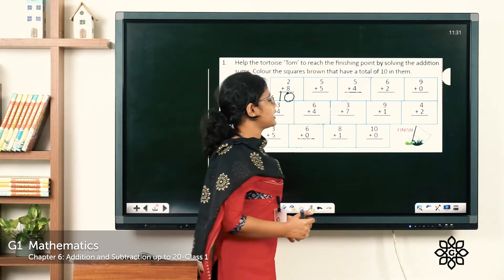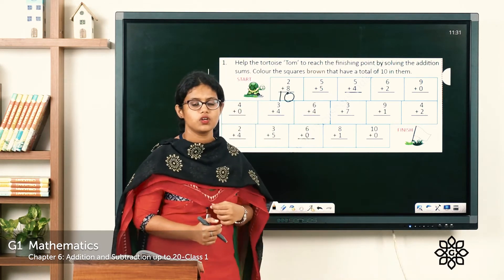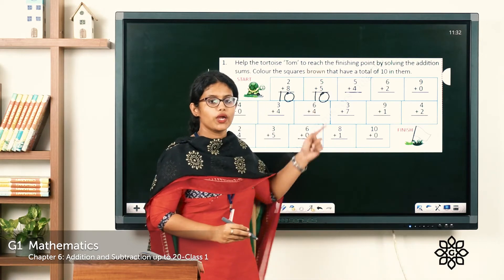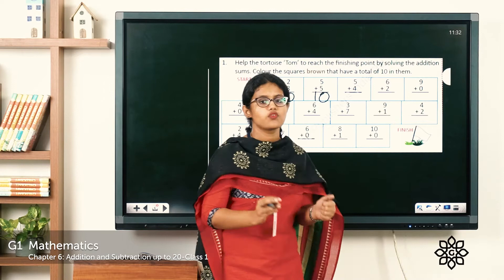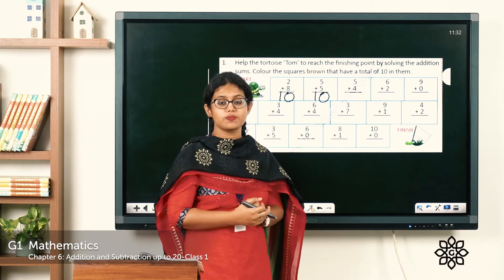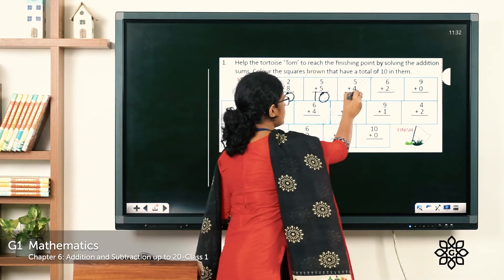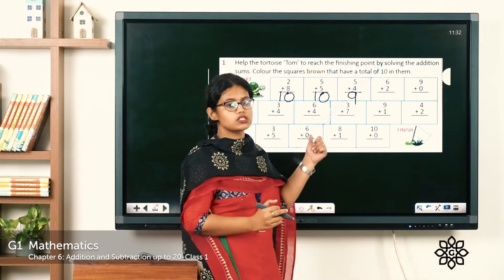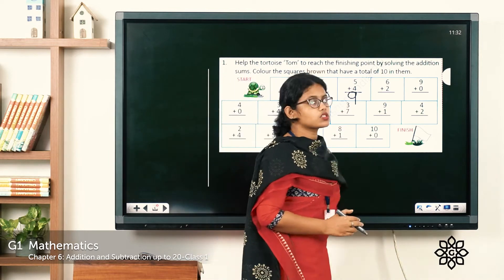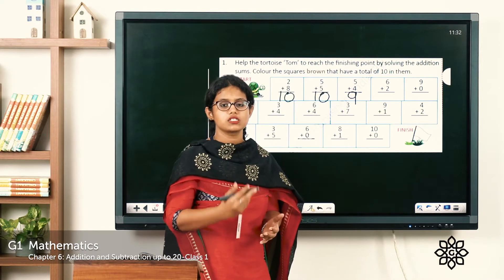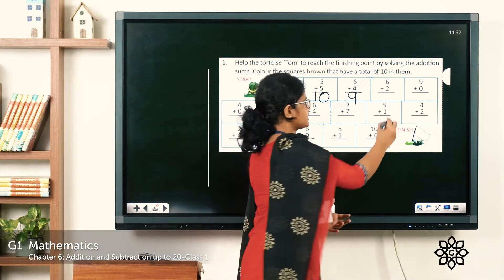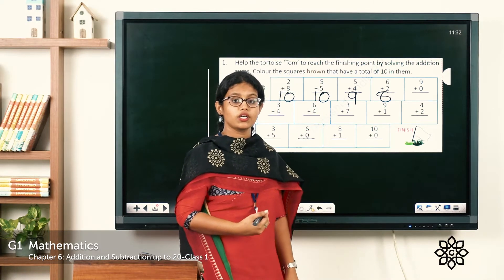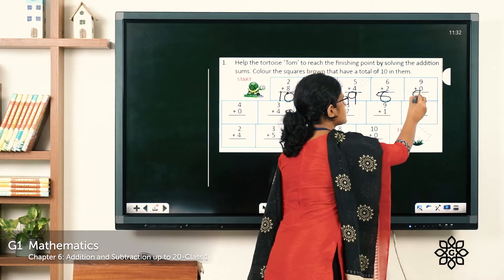Next, 5 plus 5 equals 10 — color this square brown again. The next one, 5 plus 4 equals 9, so we do not need to color this square. Then 6 plus 2 equals 8. And 9 plus 0 — when you add 0 to any number you get the same number — the answer is 9.